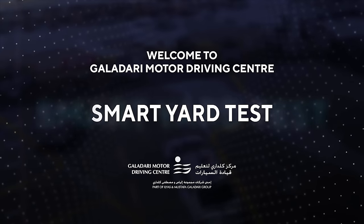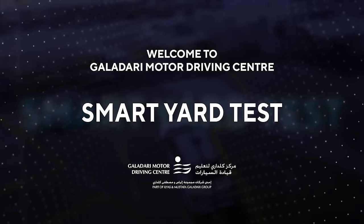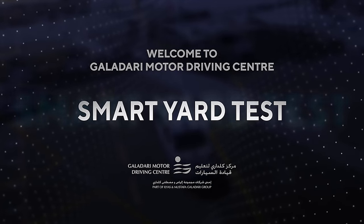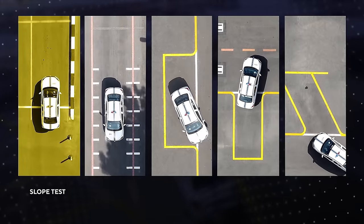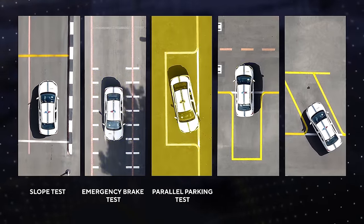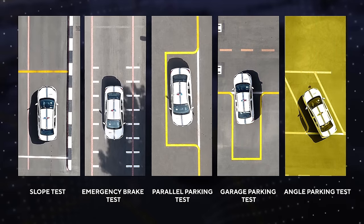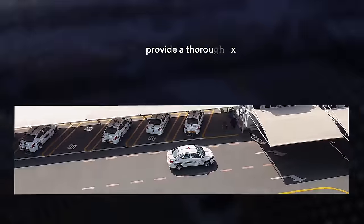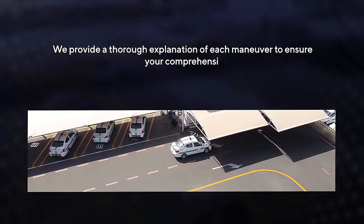Dear students, in this video we will explain the RTA Smart Yard test to help you pass it easily. The Smart Yard test is divided into five maneuvers: the slope test, emergency brake test, parallel parking test, garage parking test, and angle parking test. We provide a thorough explanation of each maneuver to ensure your comprehension.